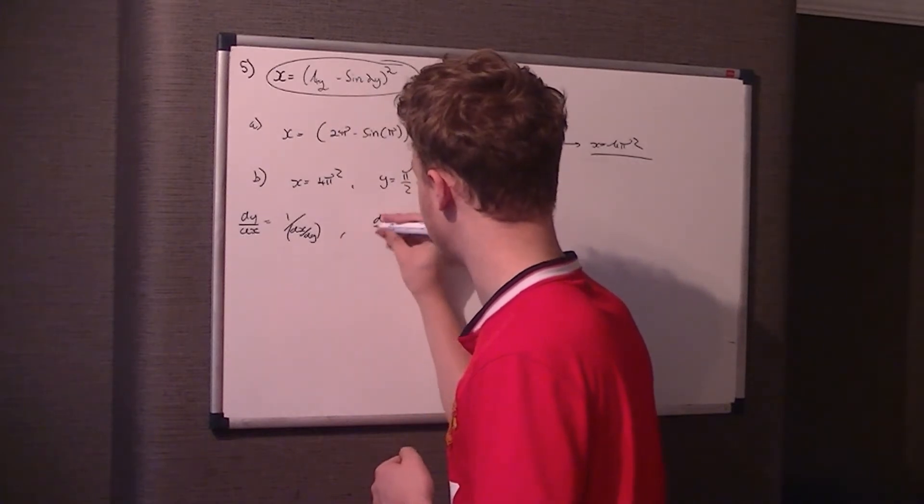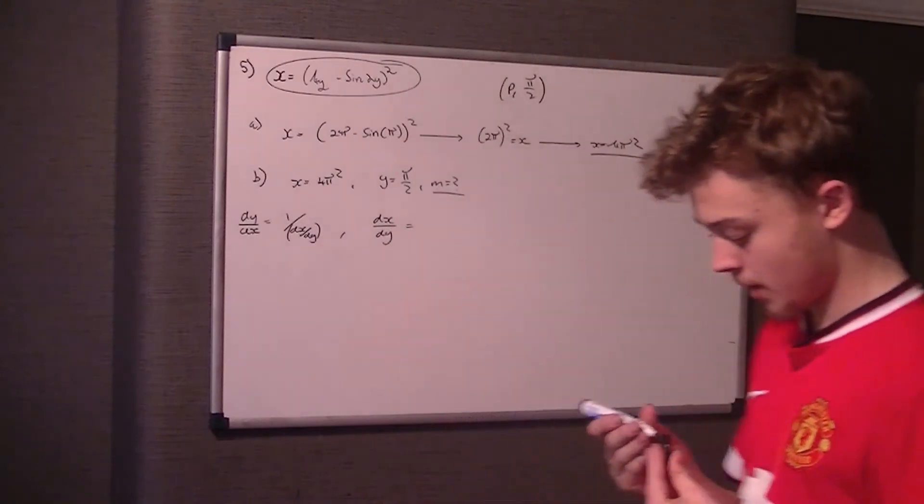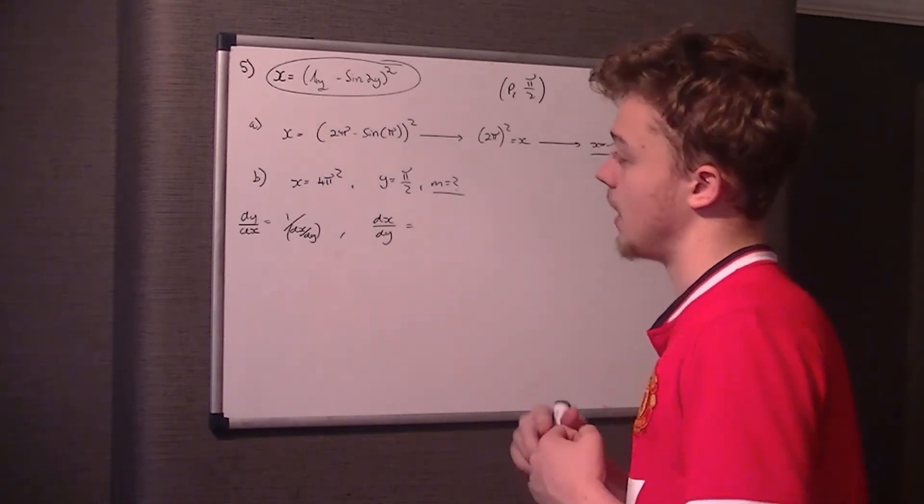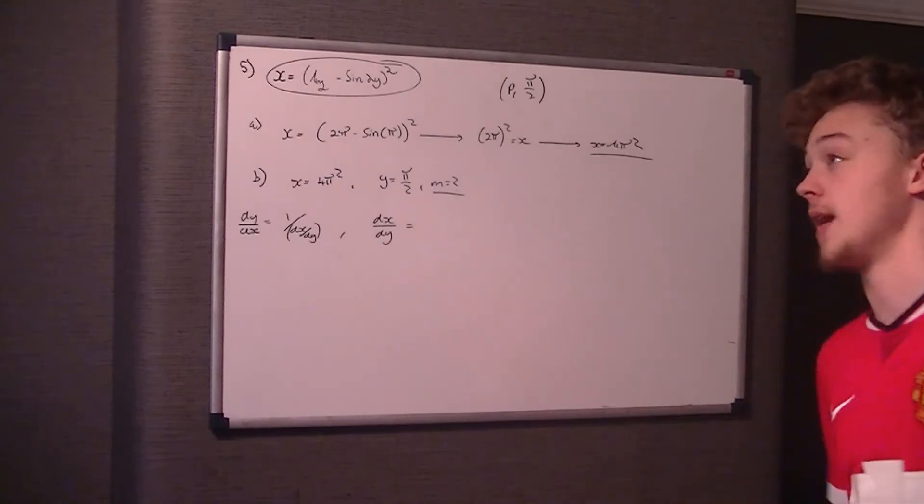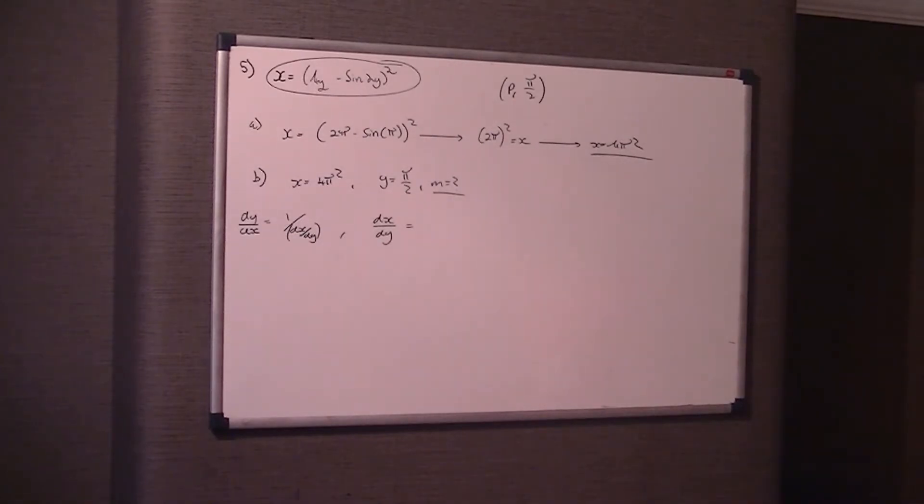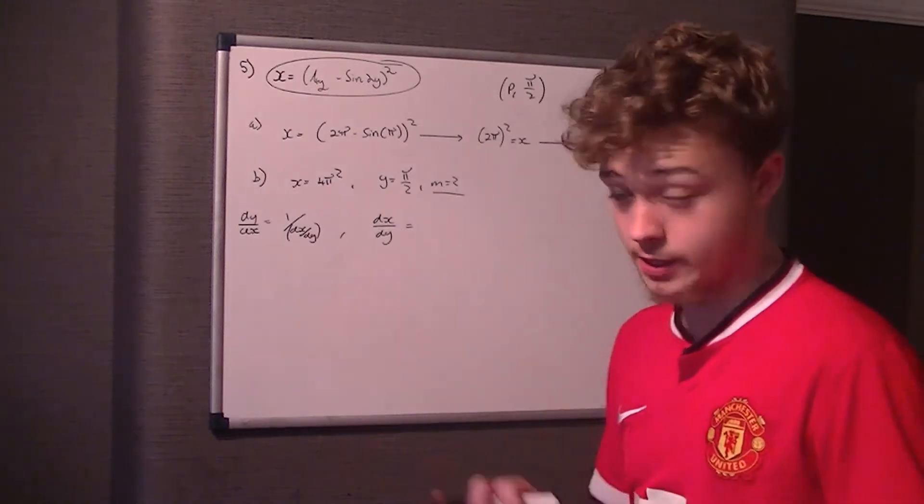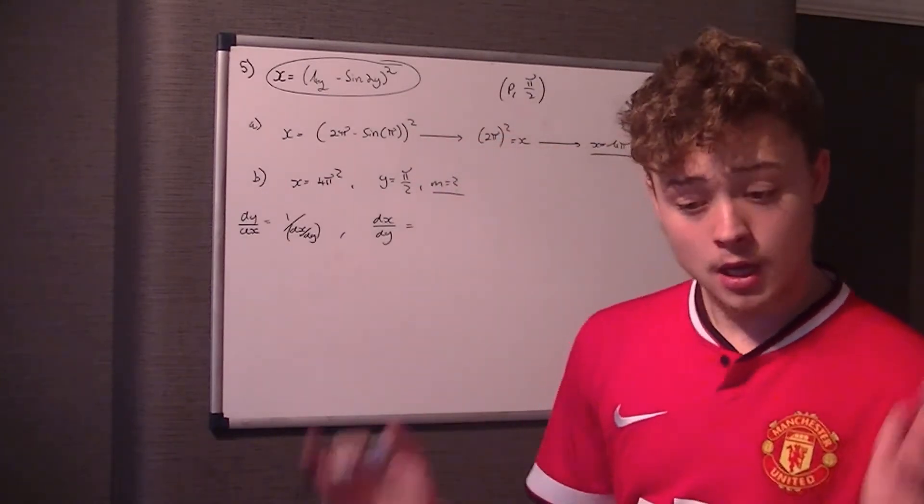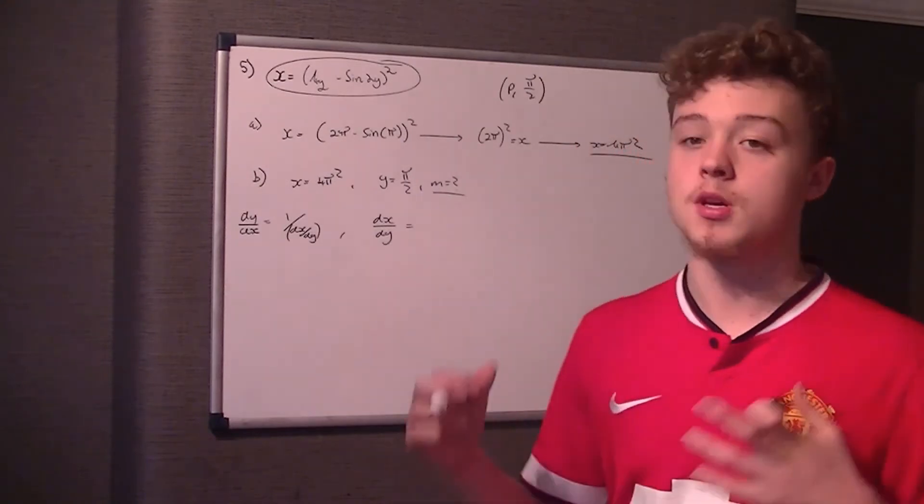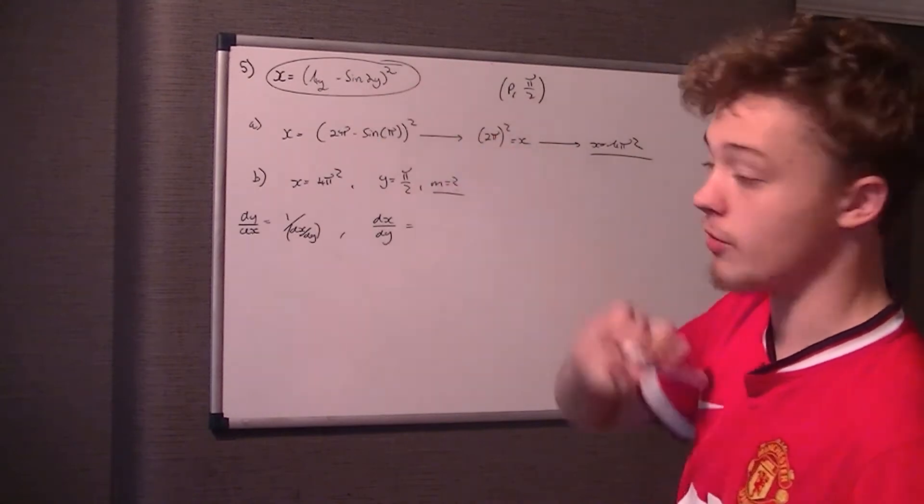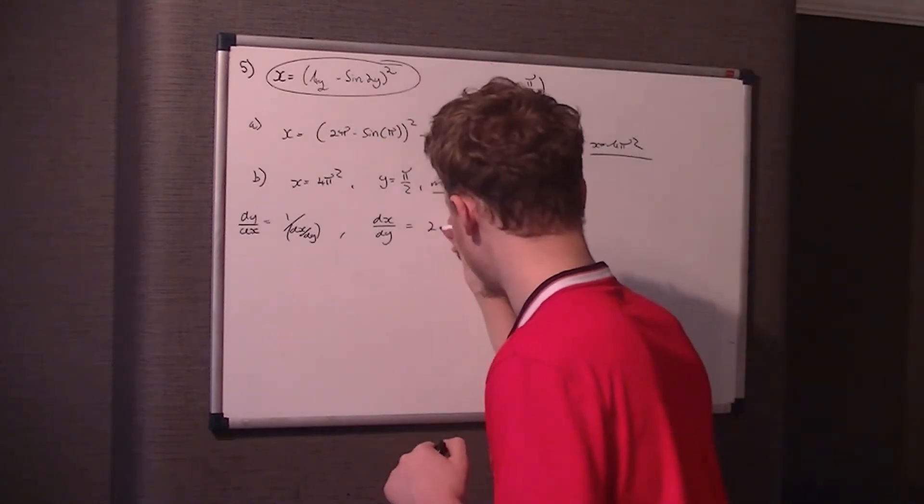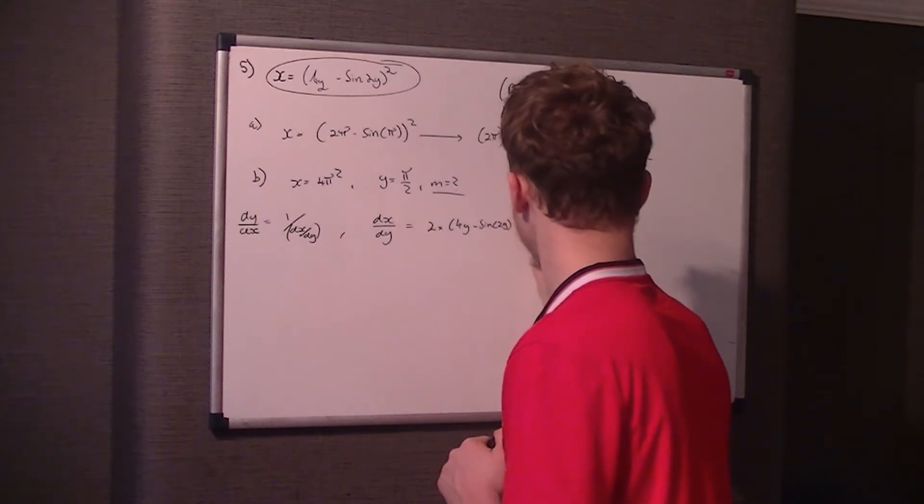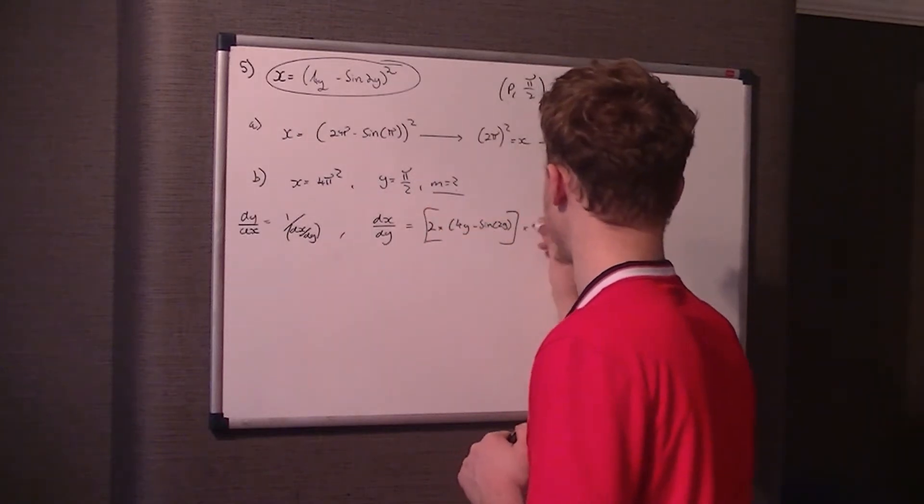It's much easier because we know dy dx is equal to 1 over dx dy, so you've flipped the fraction. You just work out dx dy and do 1 over that. So dx dy, now there's two ways of doing this. But again, it comes back to not expanding it. It's much easier to use the bracket rule, which is you times the front of the bracket by the power and reduce the power by 1. So it's 2 times what's inside the bracket, which is 4y take sine 2y.